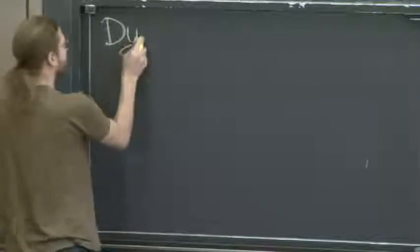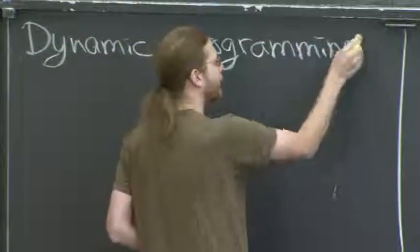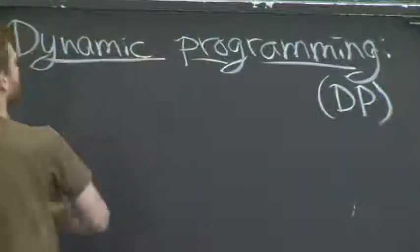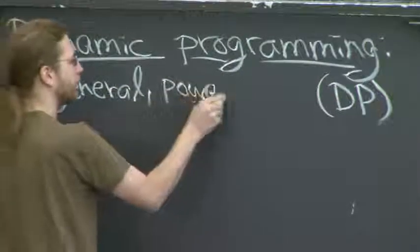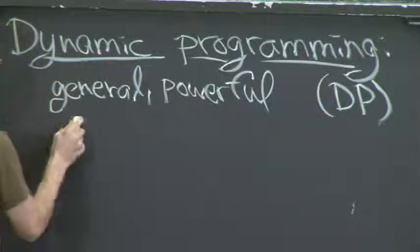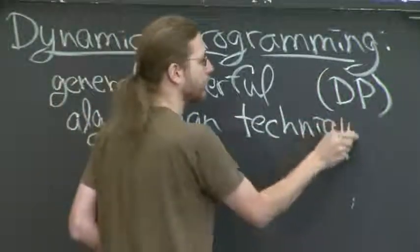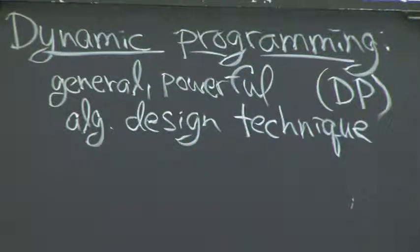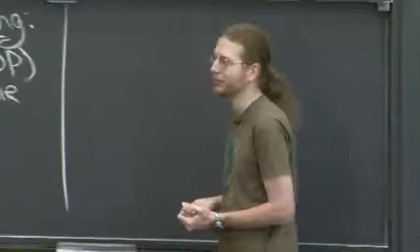So in general, our motivation is designing new algorithms. And dynamic programming, also called DP, is a great way — a very general, powerful way to do this. It's especially good and intended for optimization problems. Things like shortest paths — you want to find the best way to do something, the minimum length path. If you want to minimize or maximize something, that's an optimization problem. And typically, good algorithms to solve them involve dynamic programming.